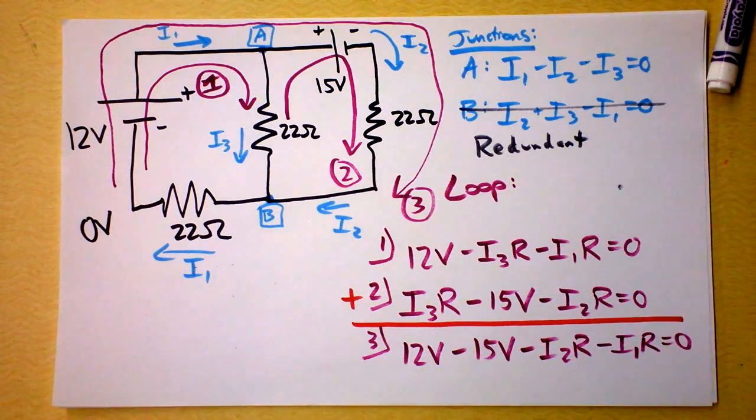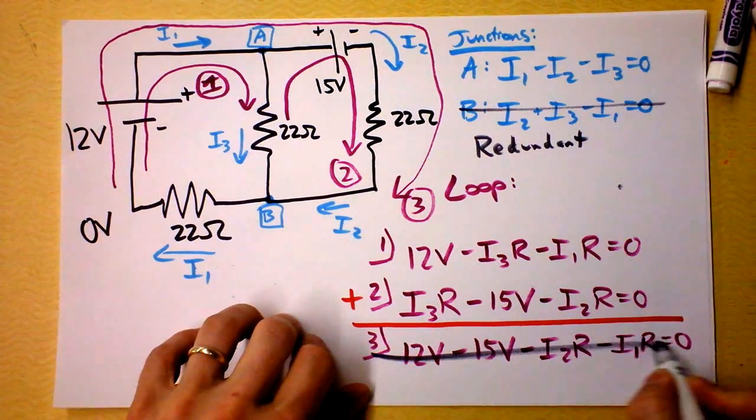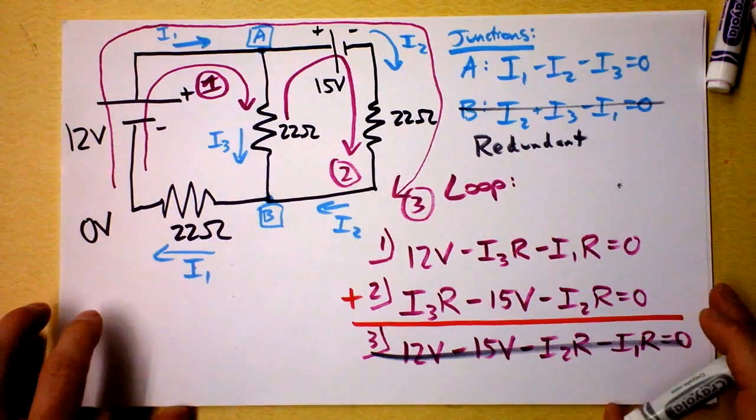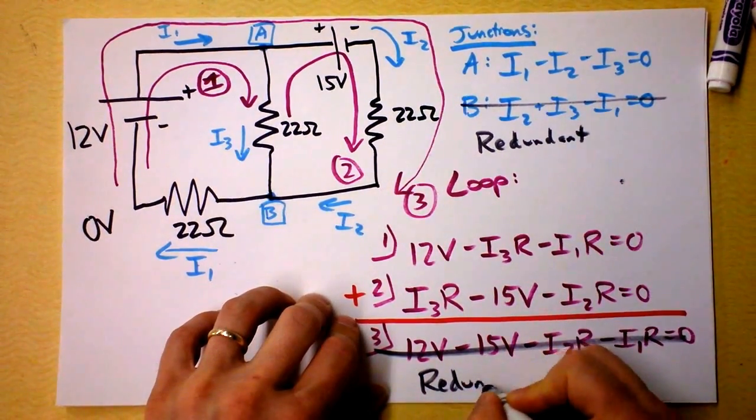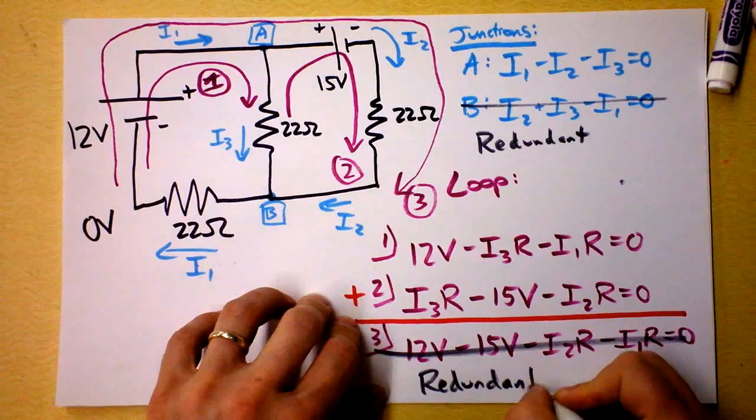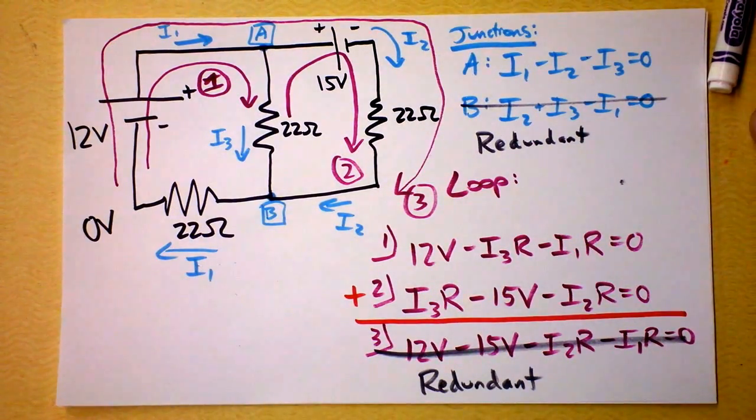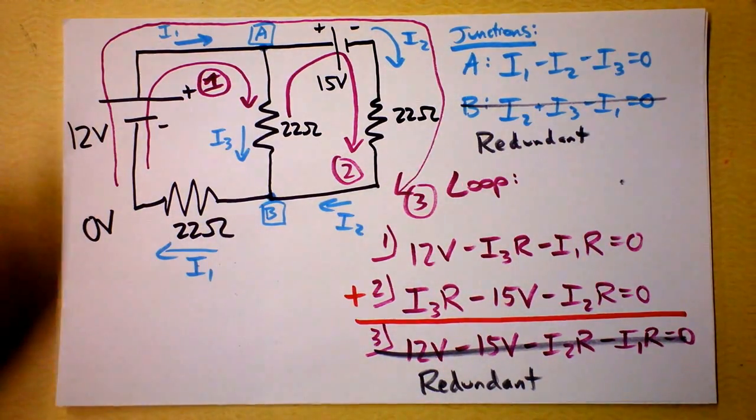So this, again, is a redundant equation. And you find this a lot with Kirchhoff's rules. They are beautiful, but you have to be careful because sometimes you get too much information. And it is simply a waste of your time. As you get more experience with them, you'll find that they can be really efficient if you know where to look for these redundancies.